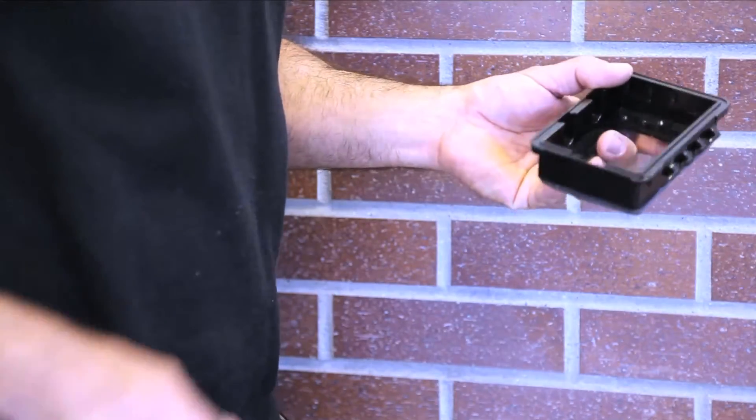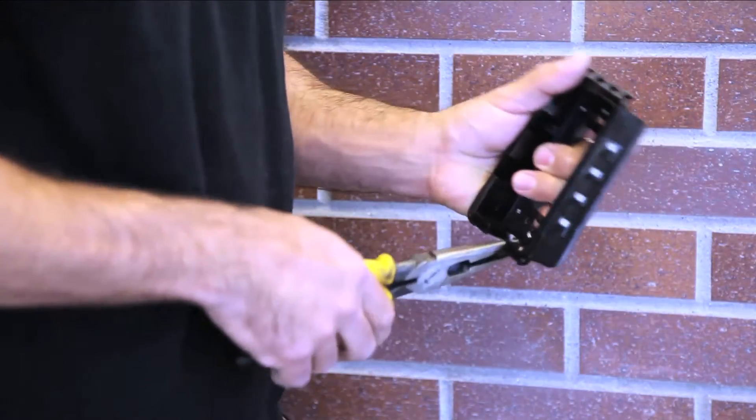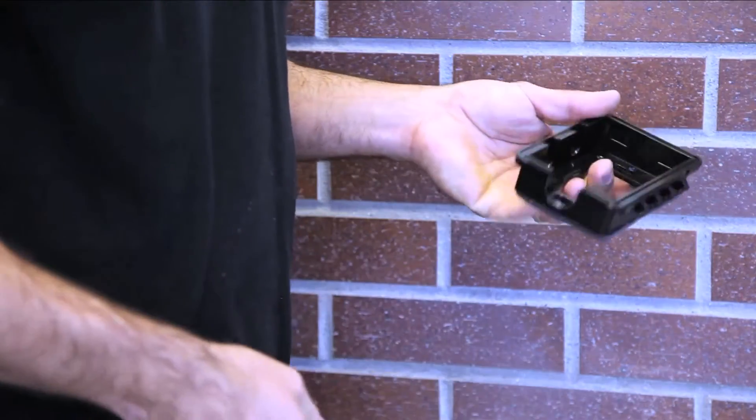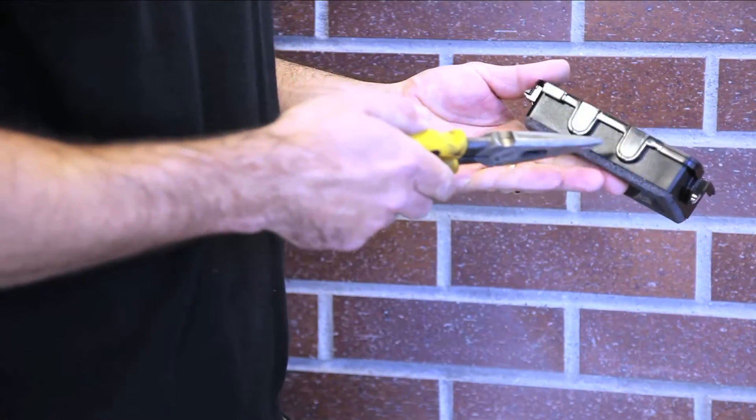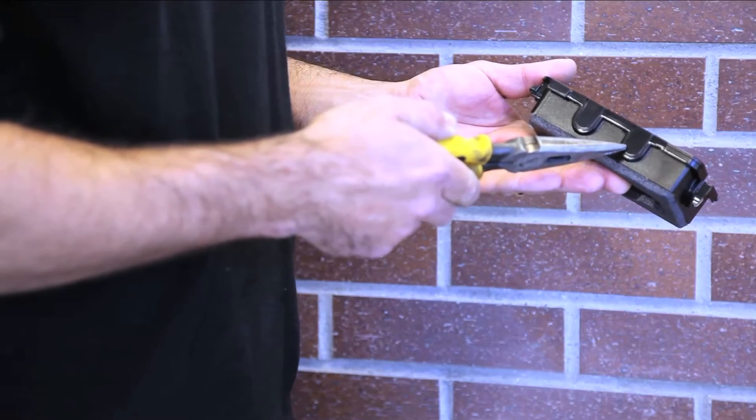We're installing this vertically, so using pliers we'll remove the single cord port on the bottom side. If this was a horizontal installation, the ports on the wider side would be removed instead.